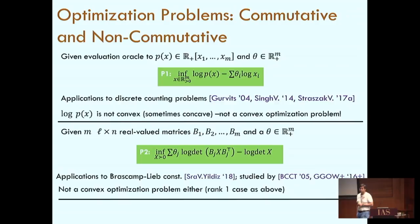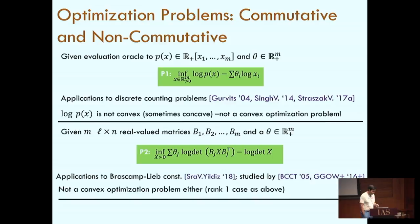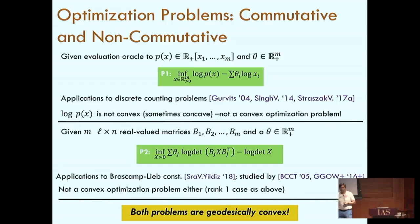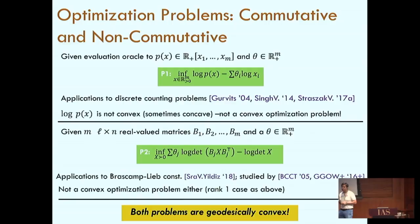There are algorithms — we saw in Rafael's talk — which can solve this problem. However, we do not know polynomial time algorithms to solve these problems. That's still an open problem. The punchline of this talk, and the motivation for studying everything, is that both these problems turn out to be geodesically convex. The hope is that by understanding geodesic convexity and developing methods to solve geodesically convex optimization problems, we will be able to solve this problem.